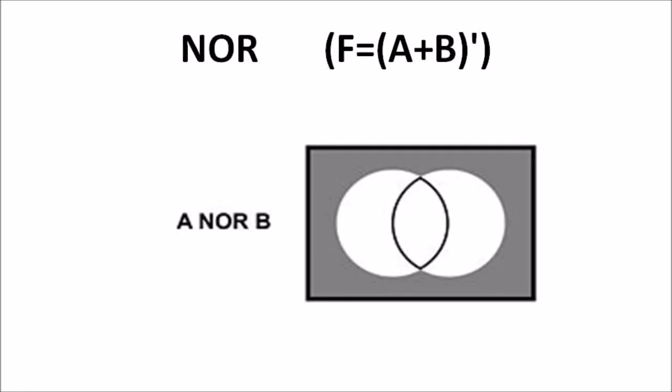The fifth representation is the NOR function, where NOR is NOT OR and f equals A plus B, whole bar. The NOR gate is an electronic circuit with two or more inputs producing only one output. It is a combination of OR and NOT gate and is the complement of the OR function. As shown in the Venn diagram, the gate produces output one when all inputs are zero, otherwise the output is zero.